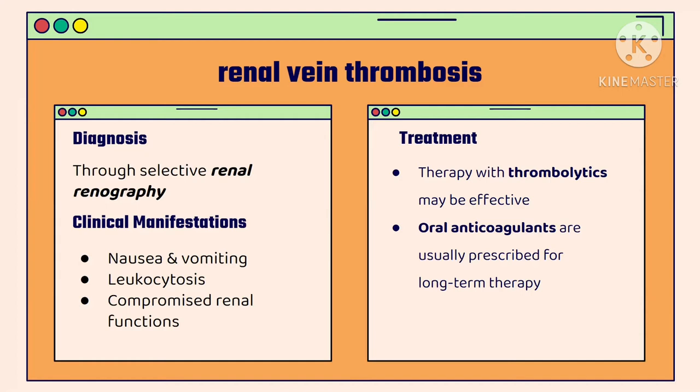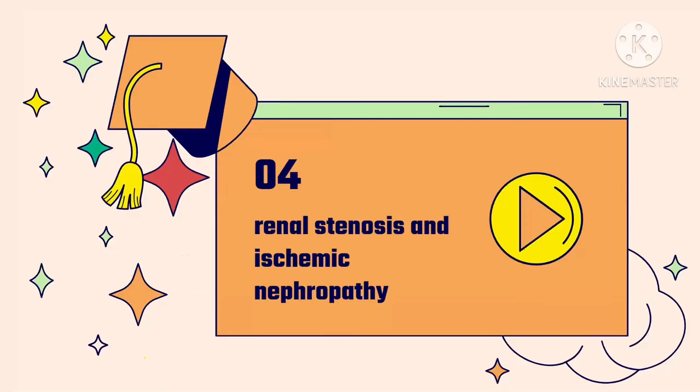Medical therapy for renal vein thrombosis includes thrombolytics, which may be effective. Oral anticoagulants such as warfarin are usually prescribed for longer-term therapy.